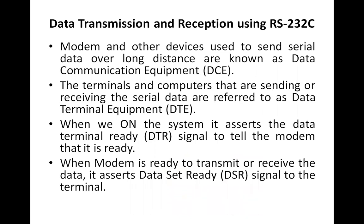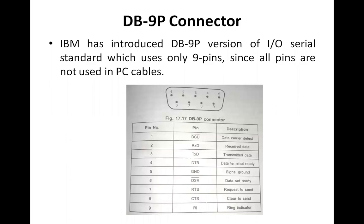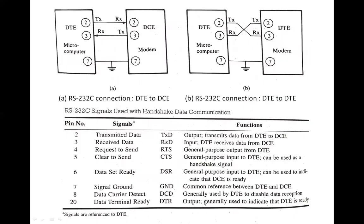For data transmission and reception using RS-232C: modems and other devices that send serial data over long distances are known as data communication equipment (DCE), while terminals and computers sending or receiving serial data are referred to as data terminal equipment (DTE). When the system is turned on, it asserts the Data Terminal Ready (DTR) signal to tell the modem it is ready.